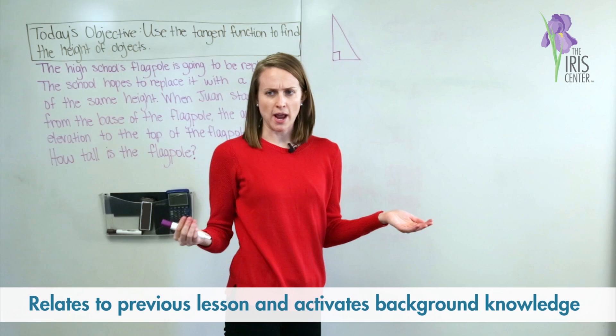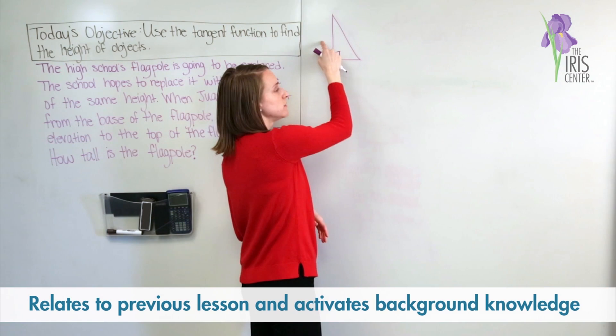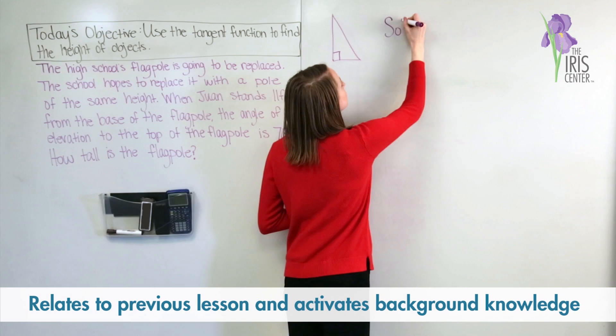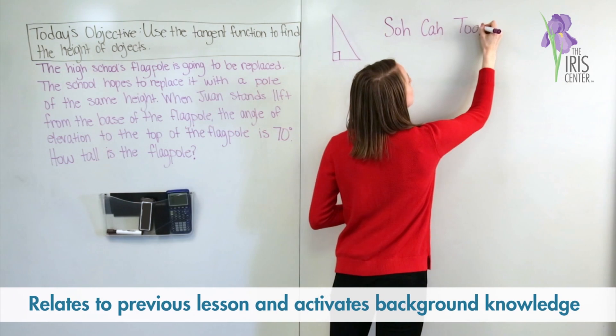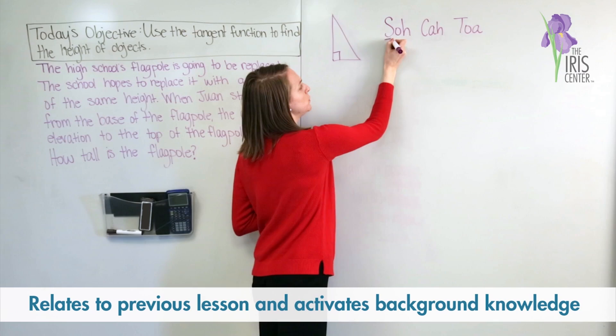And when we have a right triangle, we know we can figure out the other angles, or the lengths of the sides of the triangle, using special functions. And we learned the phrase SOH-CAH-TOA to help us remember what these ratios are.